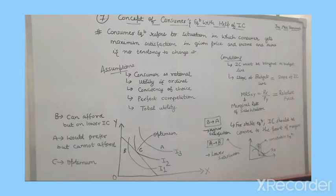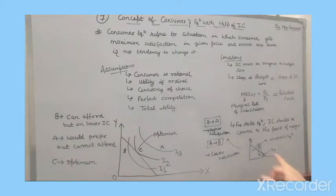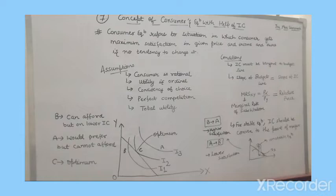Now look here — point A is fine. At point B there is unstable equilibrium. Why? At point B the condition is not right; it is not convex to the origin. If we move from point B to point A, point A represents stable equilibrium, so the consumer will go to a higher IC and get a higher level of satisfaction. But if the consumer goes from A to B — which is unstable — they will get lower satisfaction and will feel they should come back to the original position, because the consumer will feel unstable.